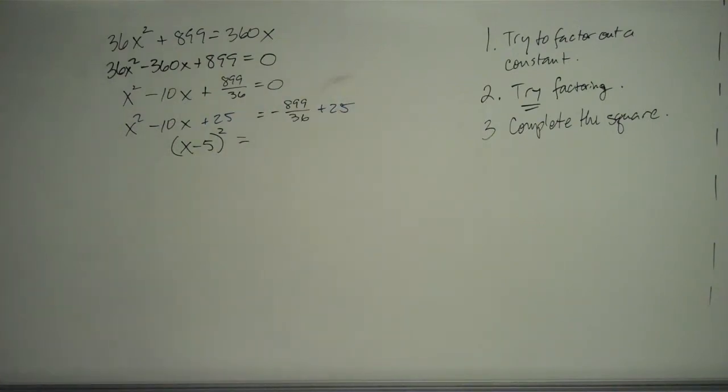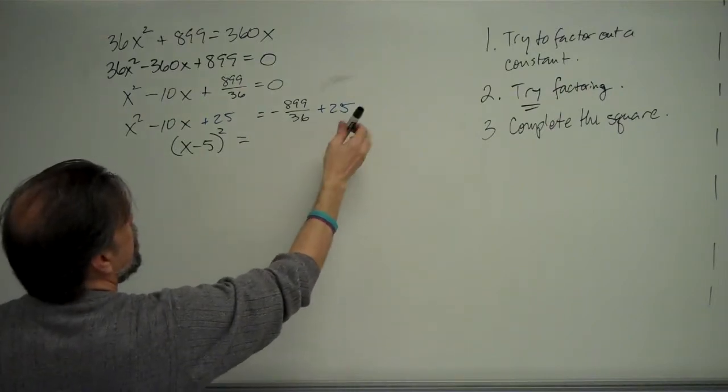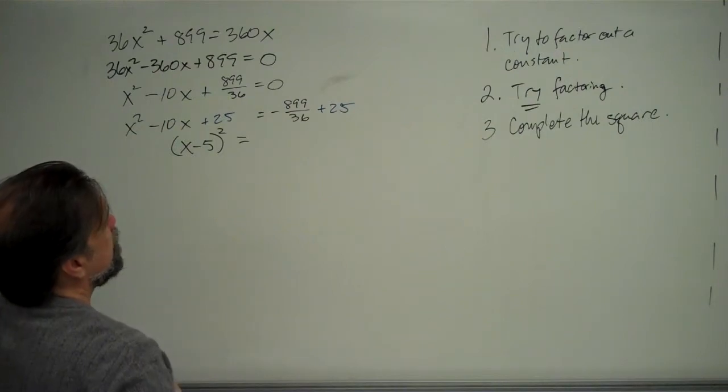And so that means we have negative 899 over 36 plus 25. And in order to add a fraction plus a whole number, we have to express this as a whole number.